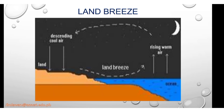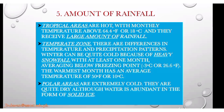For the amount of rainfall: tropical areas are hot, with monthly temperatures above 18 degrees Celsius (64.4°F), and receive large amounts of rainfall. In temperate zones, there are differences in temperature and precipitation — winters can be quite cold with heavy snowfall, with at least one month averaging below freezing. The warmest month averages about 10 degrees Celsius (50°F). Polar areas are extremely cold and quite dry, although water is abundant in the form of solid ice.